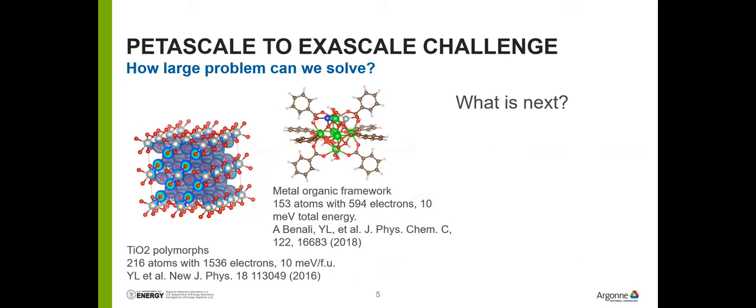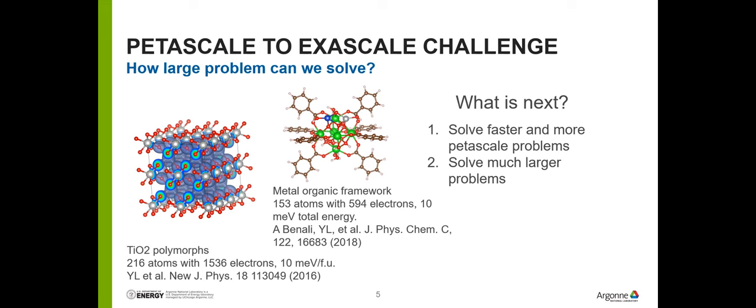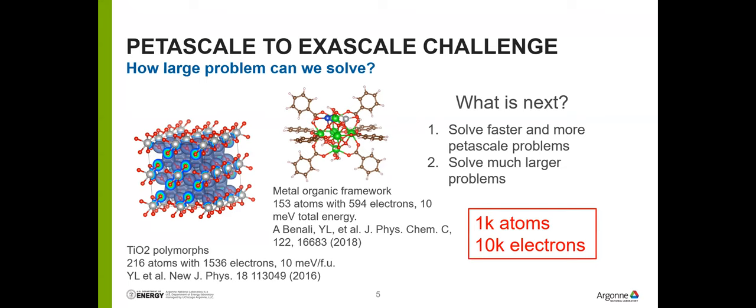So what problem does QMC solve? We are mostly aiming at materials — solids, and also simulations of molecules. This is actually not a tiny molecule; it's a metal-organic framework, a very large molecule with very complex structure. All these things are of interest for science and we want to tackle them with QMC. As we move from petascale to exascale systems, we have more compute power, so we either solve existing problems faster or get a chance to solve much larger problems — even 10 times the number of electrons. Our goal is around 1,000 atoms and thousands of electrons.